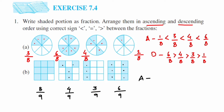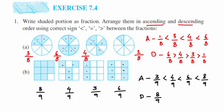For ascending order of the ninths: the smallest numerator is three, so 3/9 < 4/9 < 6/9 < 8/9. For descending order, we write the opposite: 8/9 > 6/9 > 4/9 > 3/9. That completes the second problem.